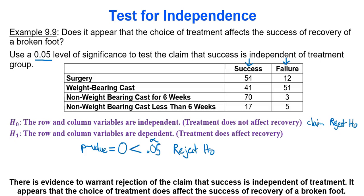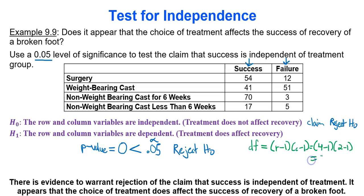If you were asked to find the critical value for a test for independence, the degrees of freedom is always the number of row categories minus one times the number of column categories minus one. In this case, that's four minus one times two minus one, which is three times one, giving degrees of freedom of 3. Your spreadsheet confirms this, but sometimes you'll need to calculate it by hand. Use your significance level and degrees of freedom in the chi-squared table to find the critical value.